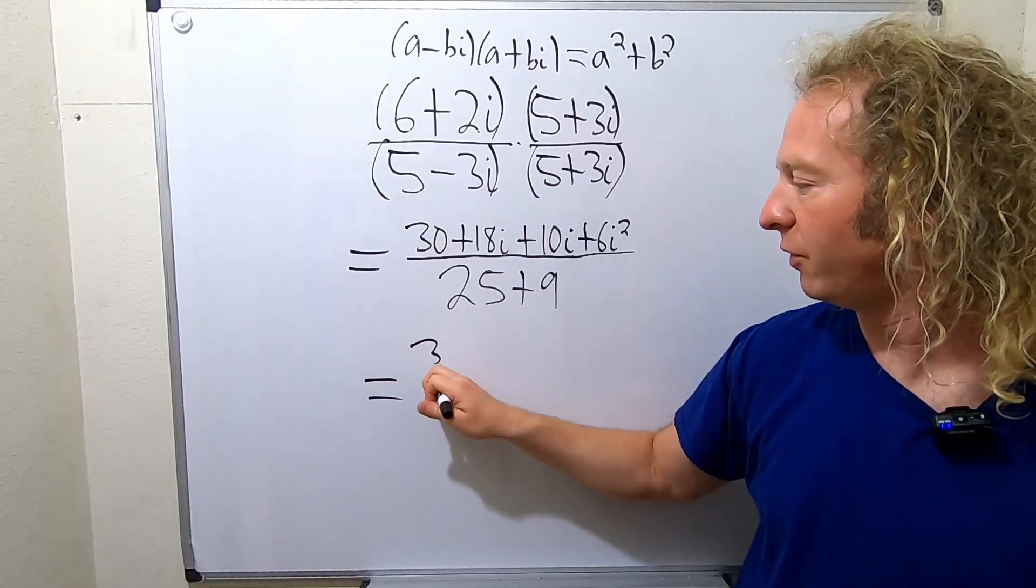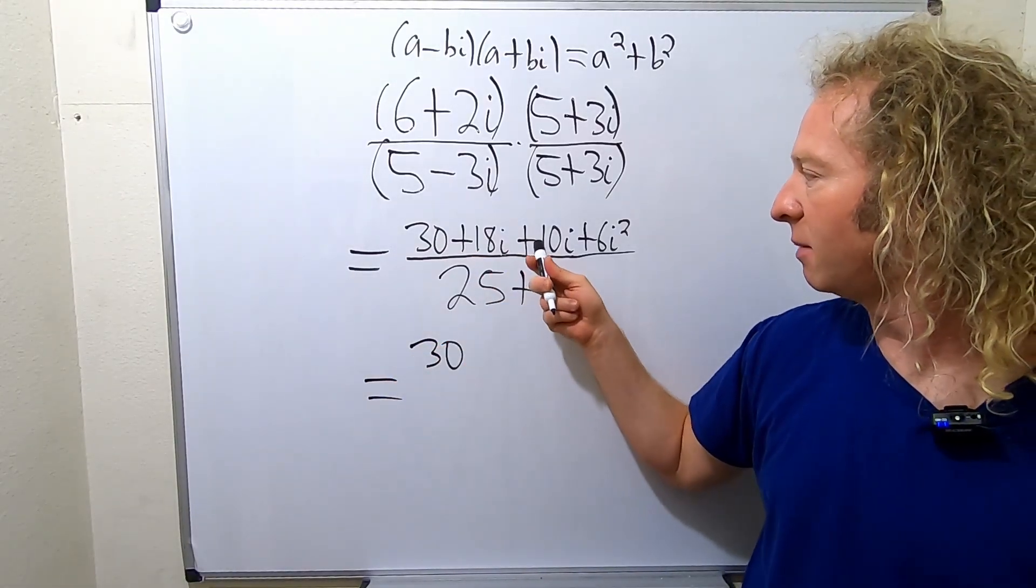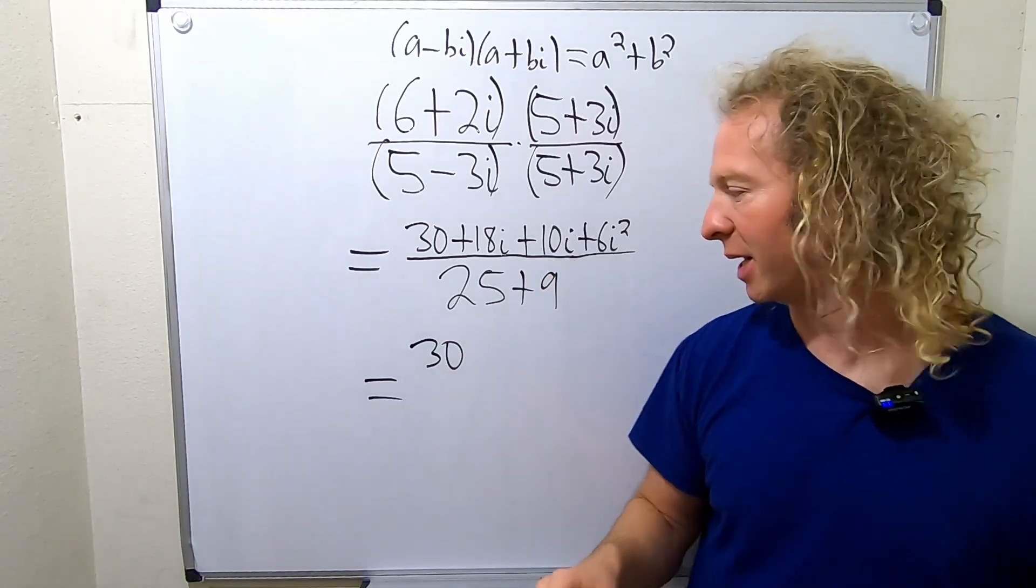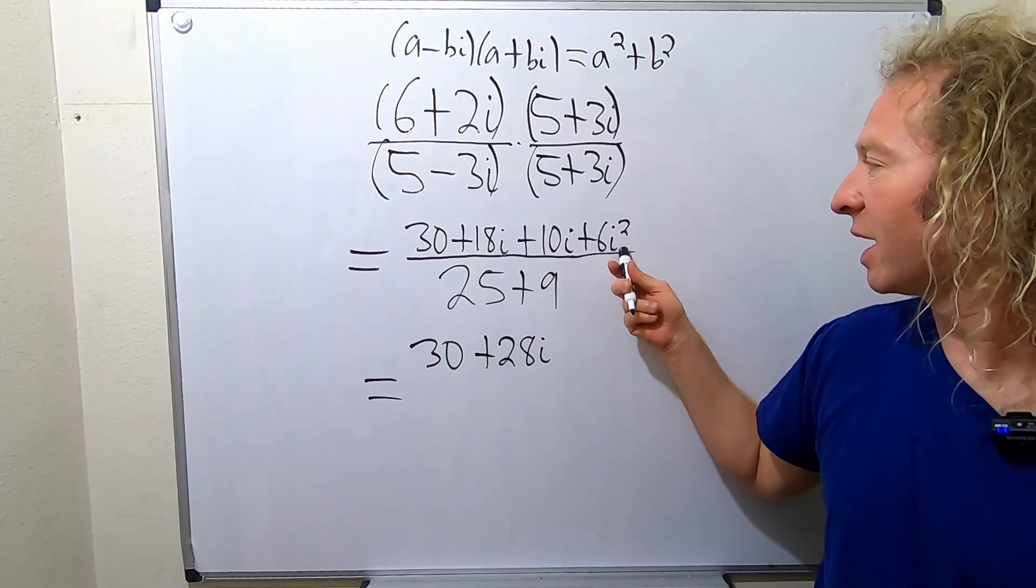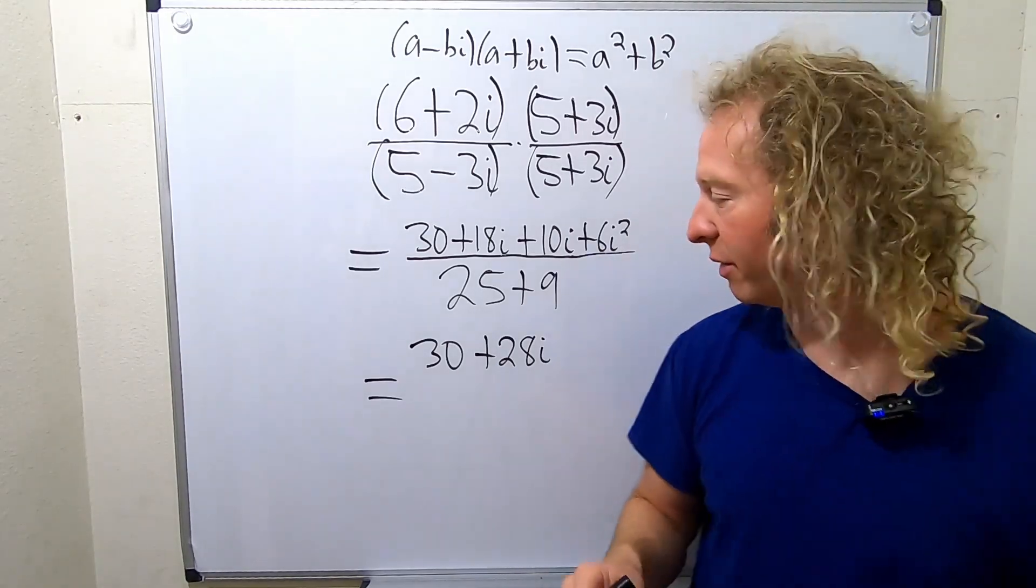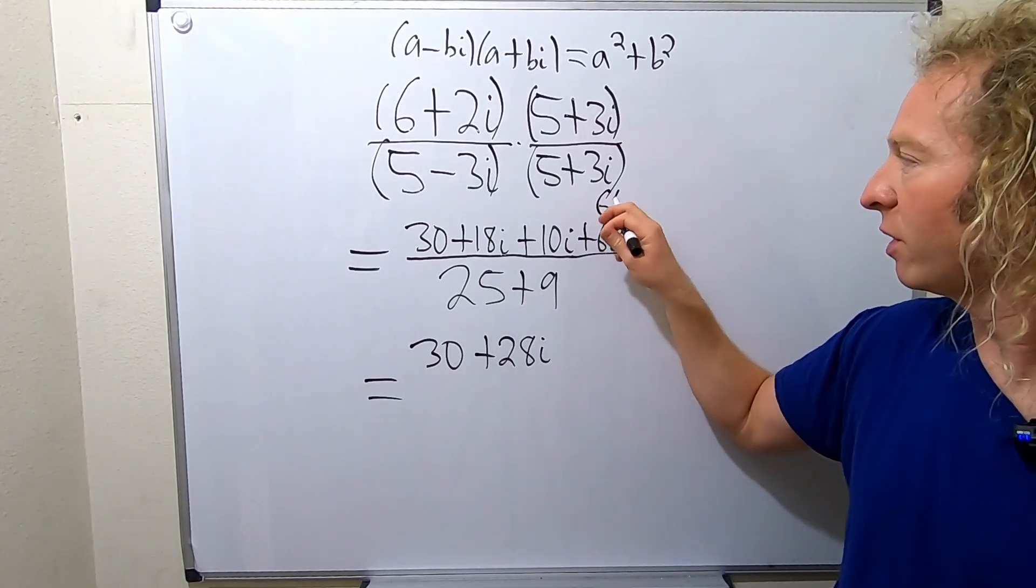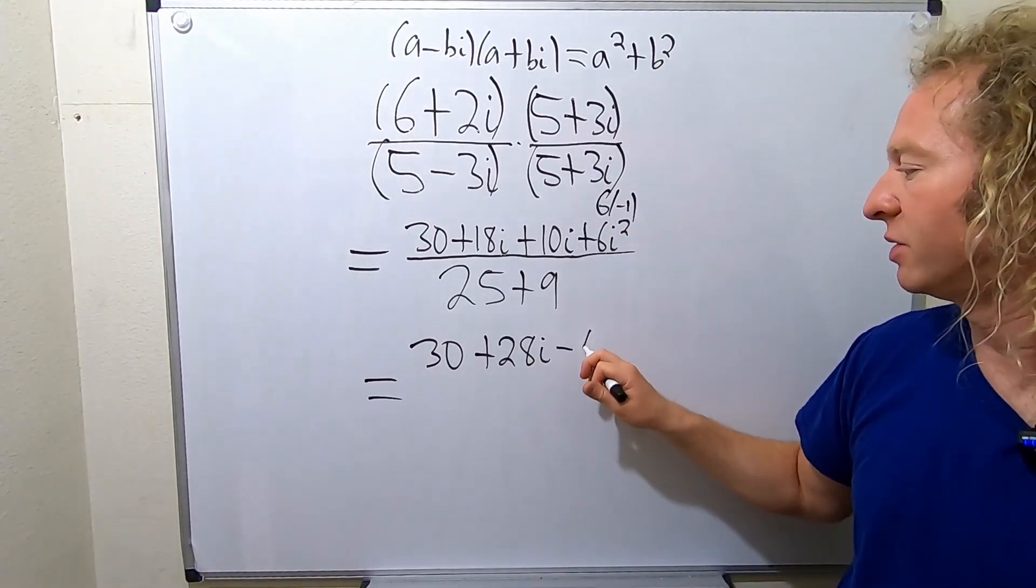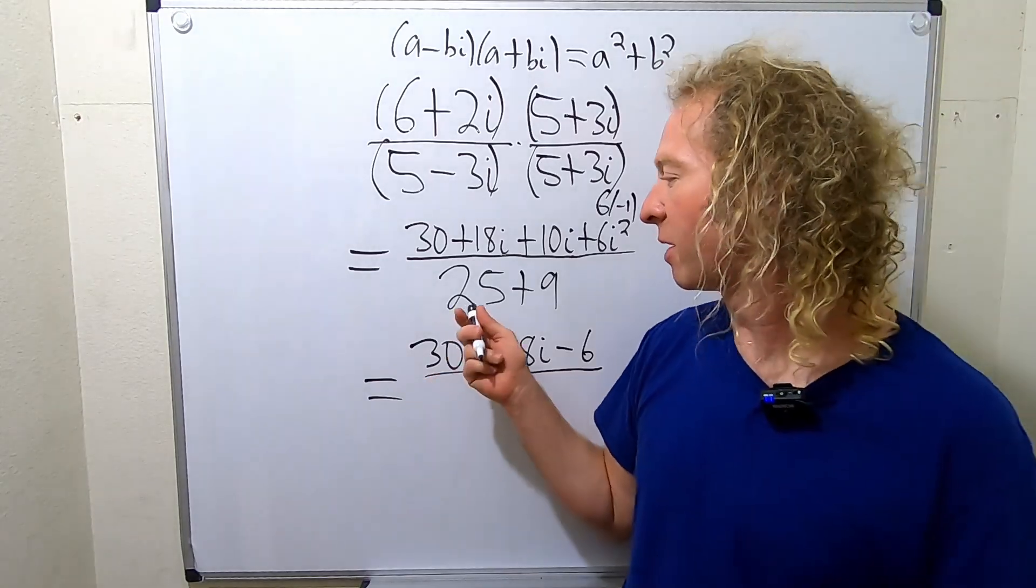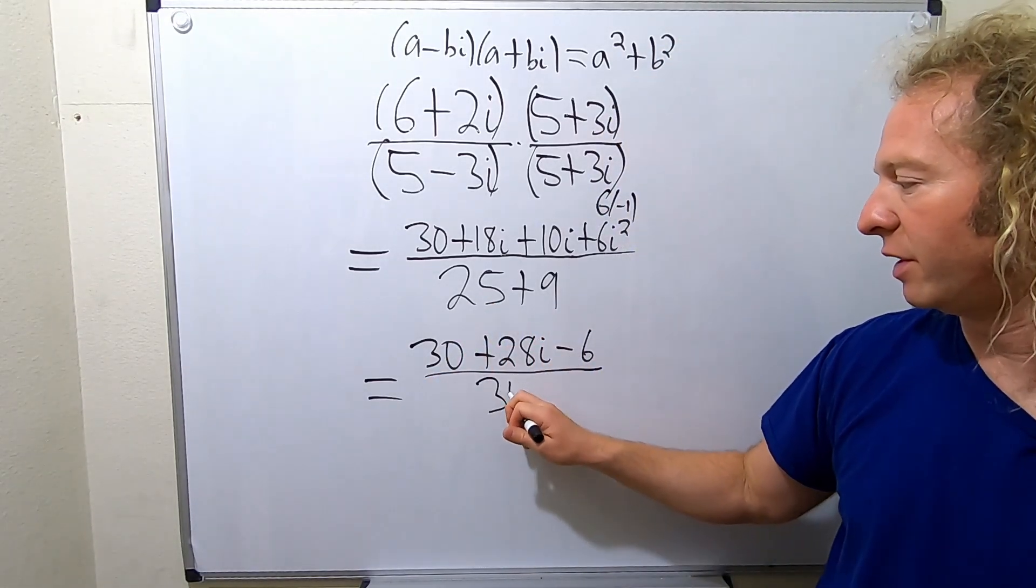So we have 30. Let's see, 18i plus 10i is 28i. 6i squared, i squared is negative 1, so it'll be 6 times negative 1. So it's going to become a negative 6, so minus 6. Then on the bottom, we have 25 plus 9, so that's going to be 34.